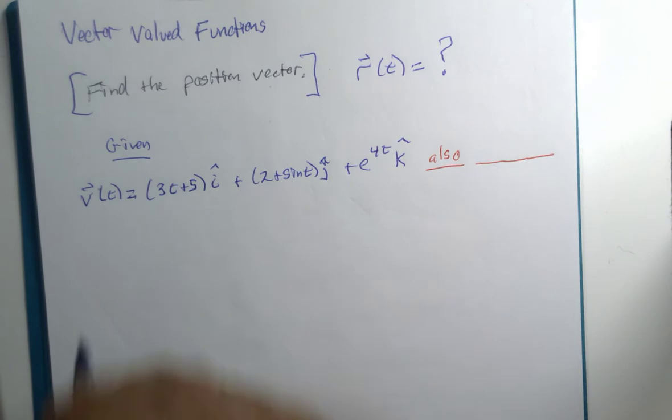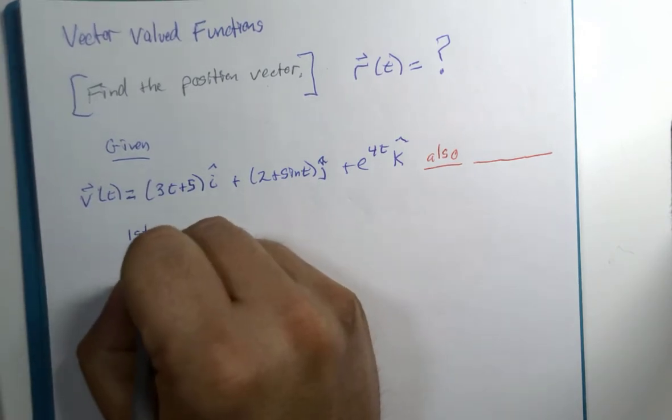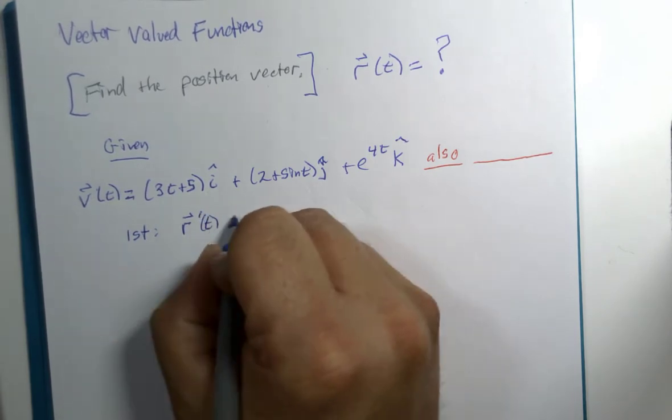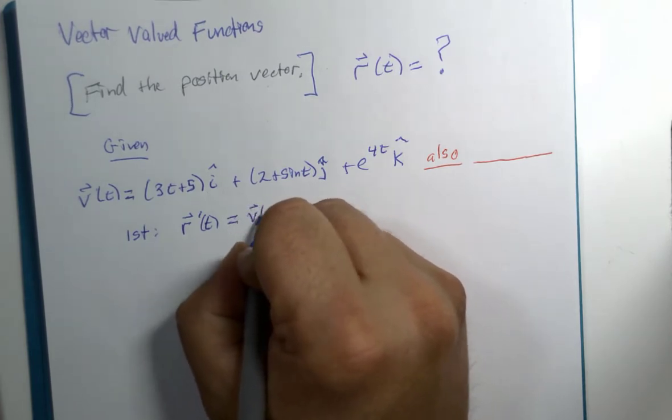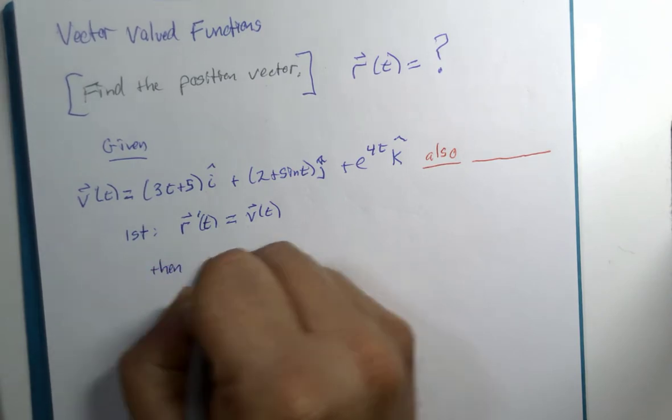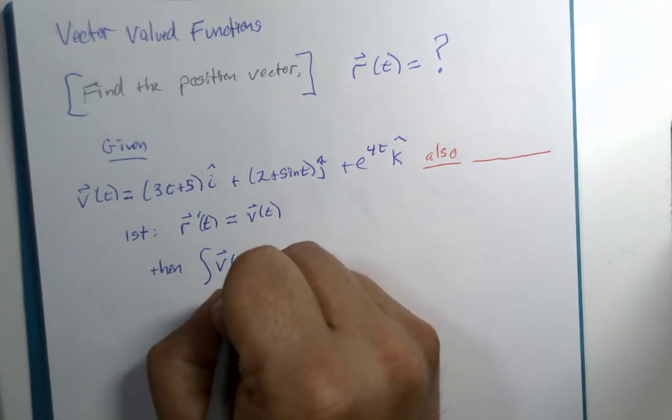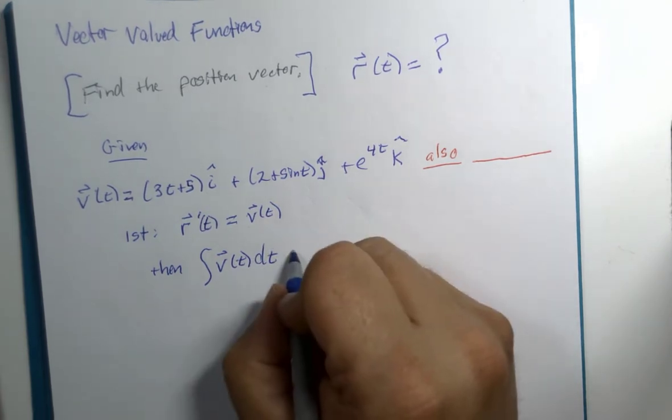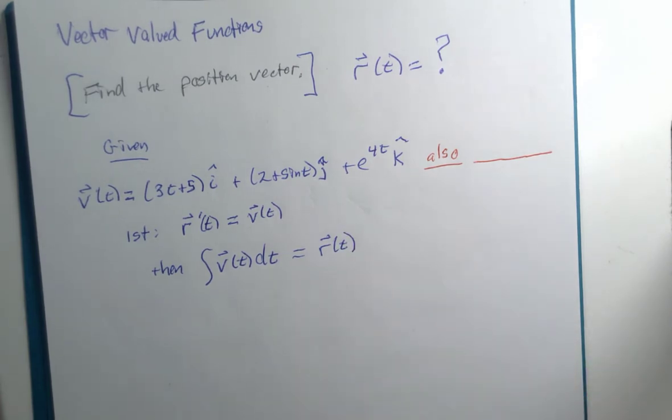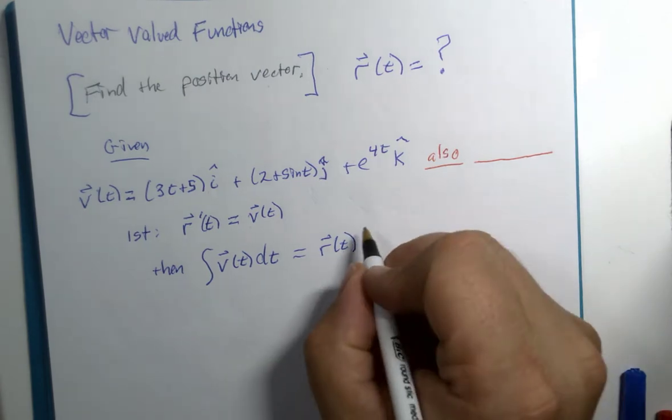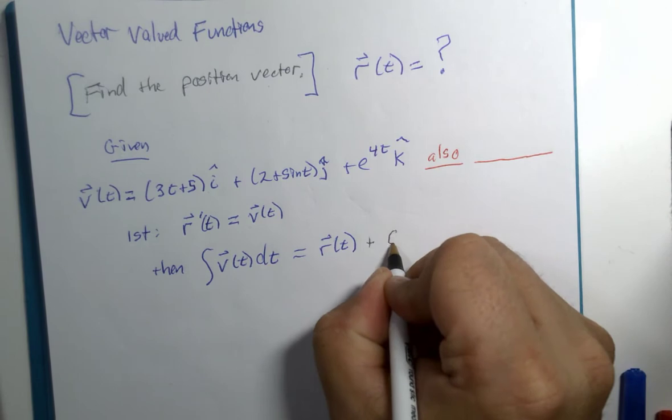I just want to remind you that if the derivative of r of t is equal to the velocity vector, then that means if we integrate the velocity vector and t is the variable, we should get the position vector. But we know what we should get and what we do get don't always match up the first time. In mathematics, sometimes you have to account for other possibilities. In this particular case, the other possibility is some form of constant of integration.